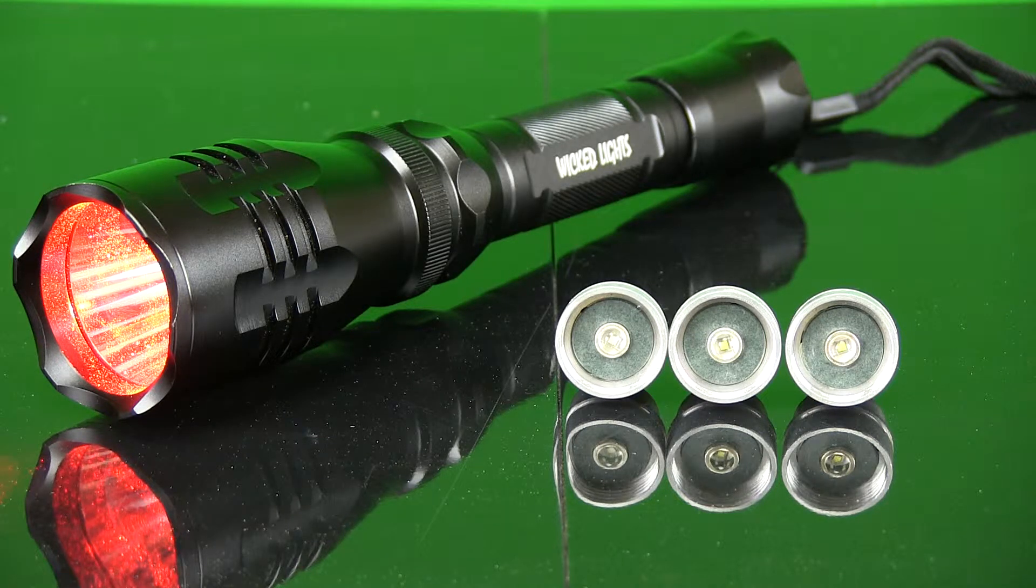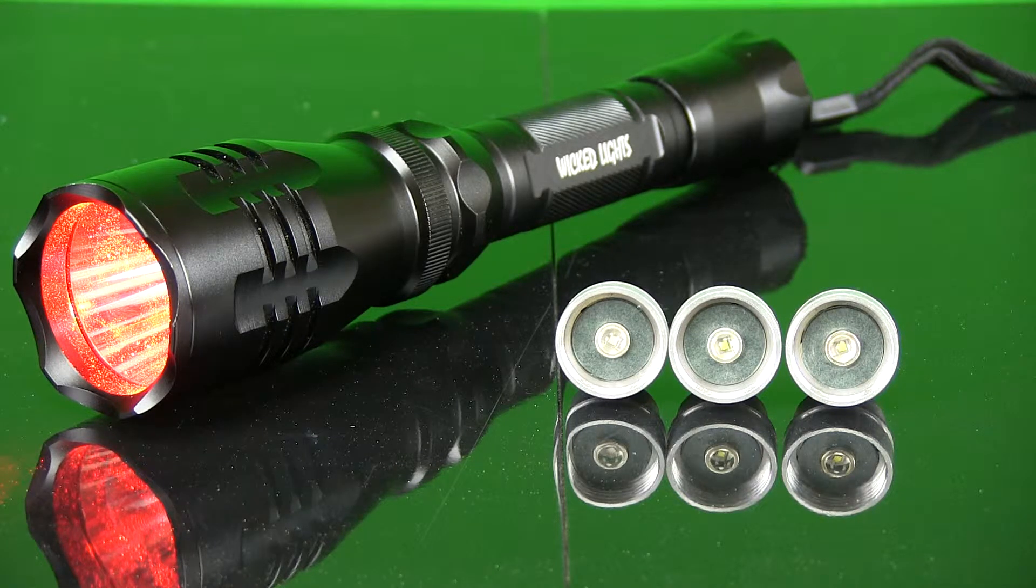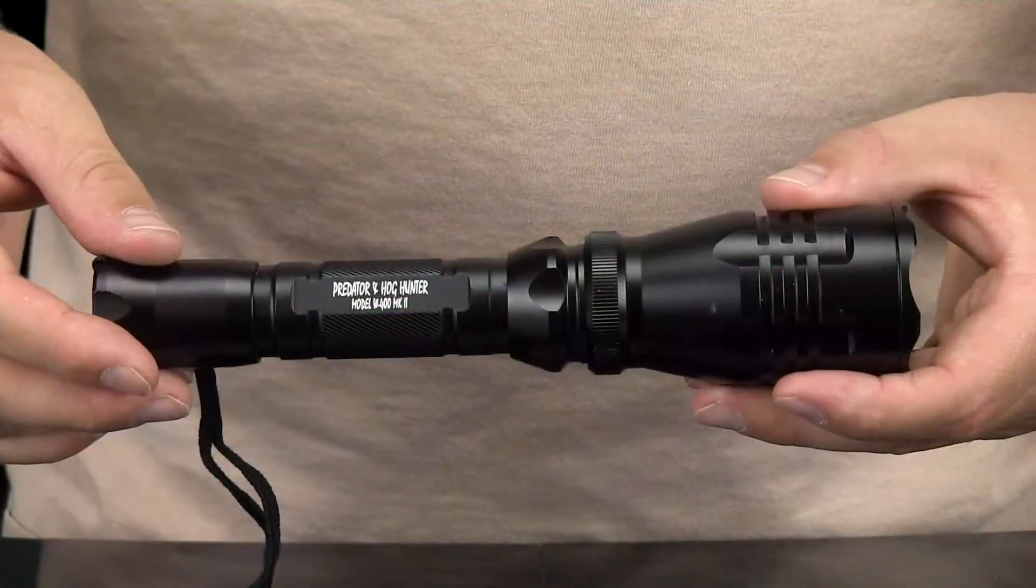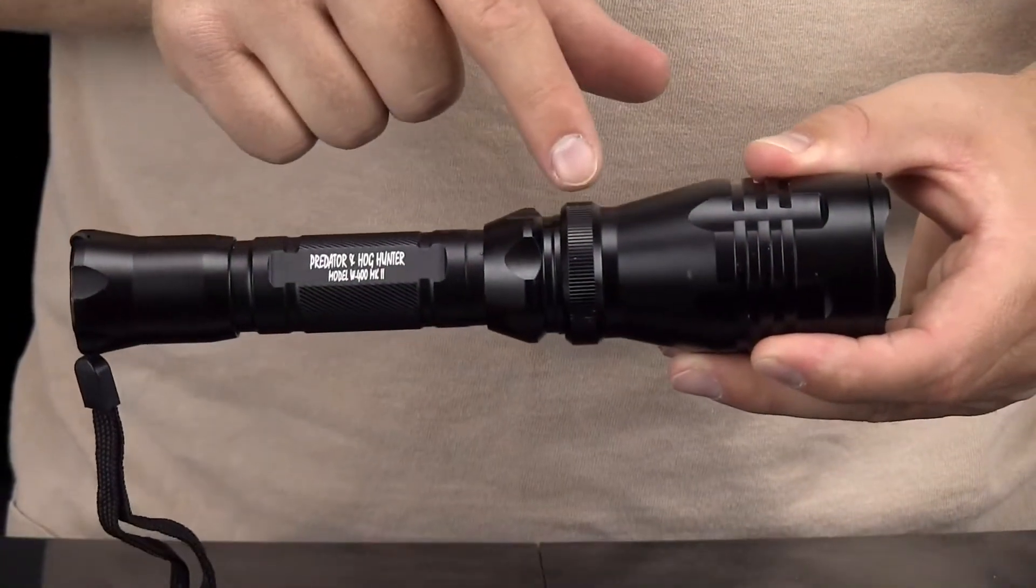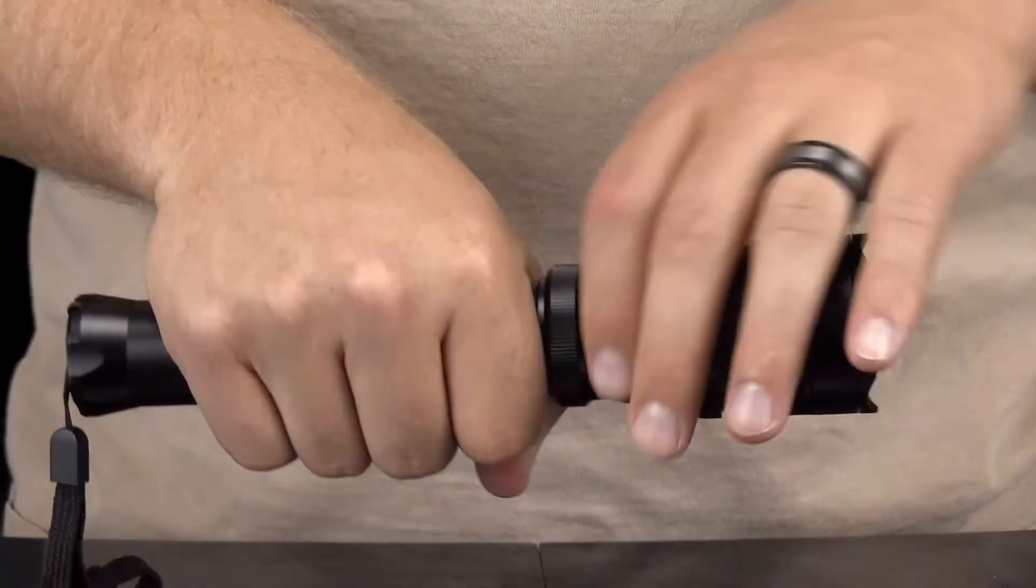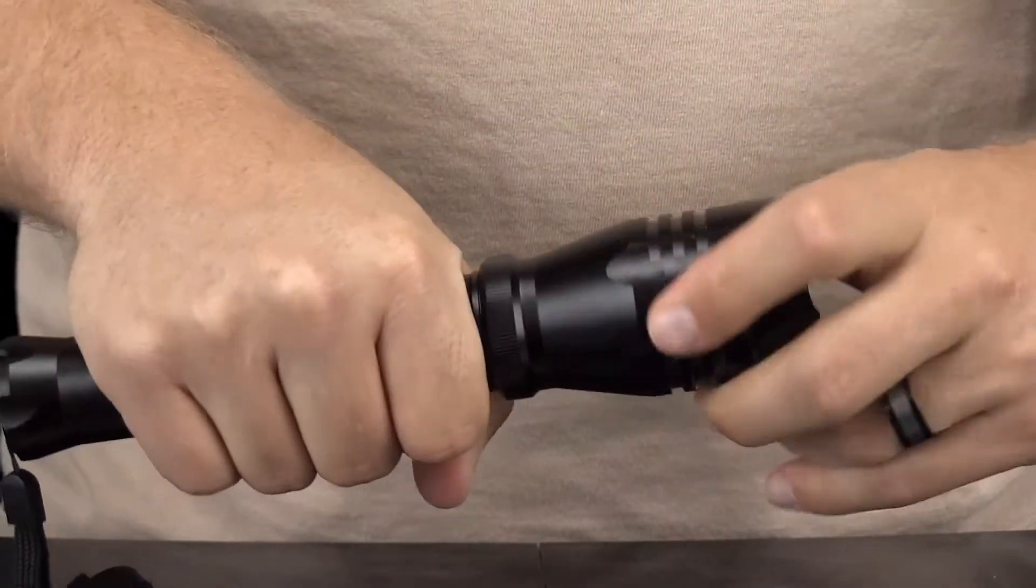There are two basic ways to change the LED assembly in the W400. The easiest way is to simply unscrew the entire bezel from the light by firmly holding the grip points on both the bezel and the light housing.